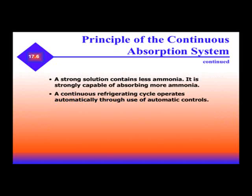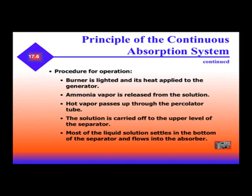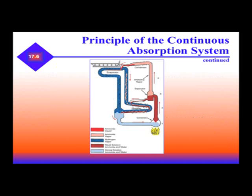A continuous refrigeration cycle operates automatically through the use of automatic controls. The sequence of operation: the burner is lighted and its heat is applied to the generator. Ammonia vapor is released from the solution. Hot vapor passes through the percolator tube. The solution is carried off to the upper level of the separator. Most of the liquid solution settles in the bottom of the separator and flows into the absorber. The liquid mixture rises, the ammonia vapor separates off and goes into the condenser. The liquid goes into the evaporator, mixes with water in the opposite direction, and as it boils off back into vapor, we absorb heat.